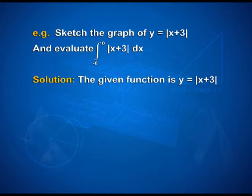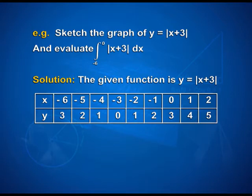For the solution, the given function is y = |x+3|. We prepare a table of x and y coordinates: (-6, 3), (-5, 2), (-4, 1), (-3, 0), (-2, 1), (-1, 2), (0, 3), (1, 4), (2, 5) are the respective ordered pairs obtained from y = |x+3|.